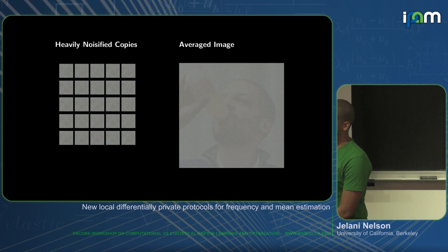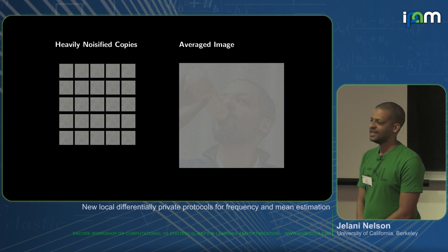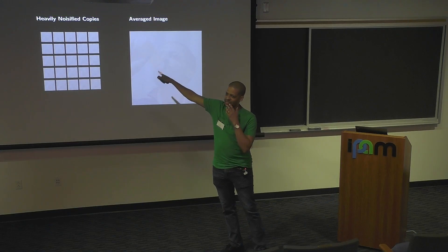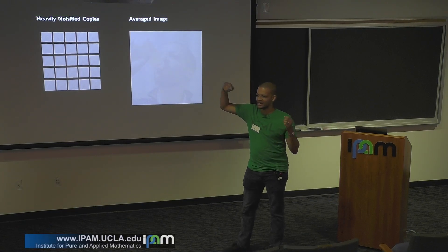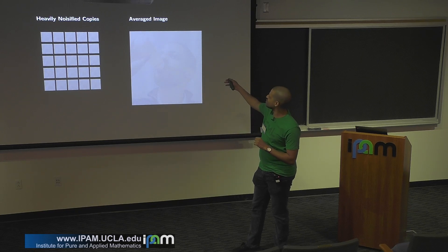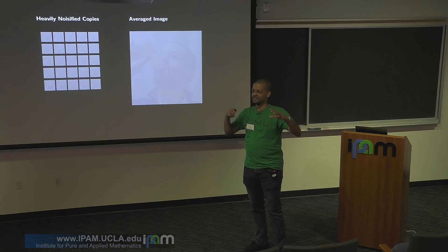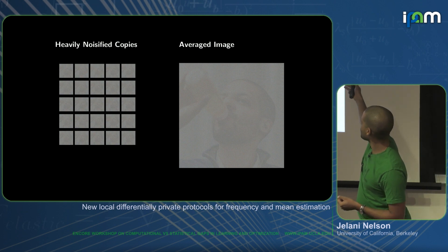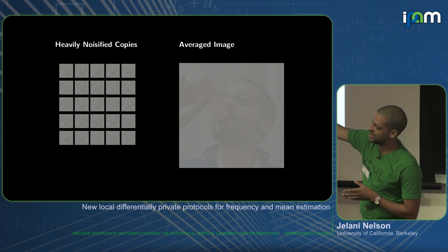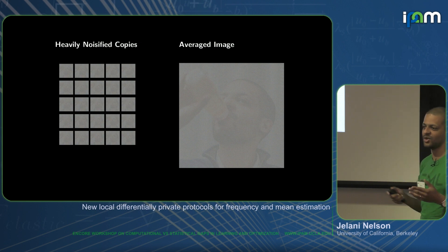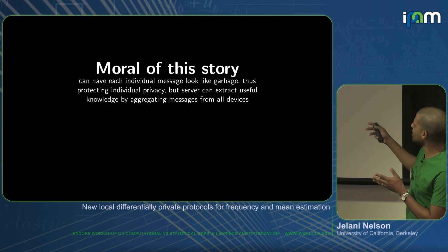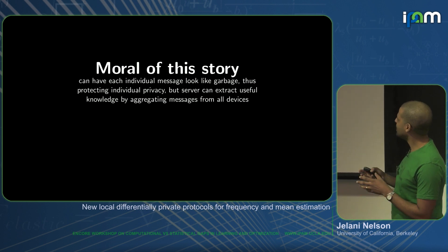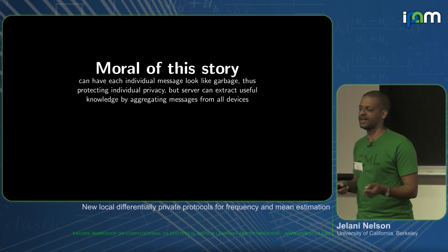The idea is that we don't just have one person with a smartphone — we have millions of people with smartphones. We want to know, did this particular image go viral? So we look at our million devices, each one sending some message. Some are sending the image of me with a bottle, some are sending a picture of a cat. We want the server to aggregate all these noisified, randomized messages and extract knowledge from the aggregate — be able to say this is approximately an image that many people are sending, although it can't identify which people are sending it.